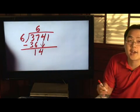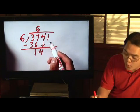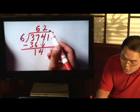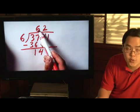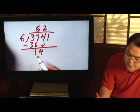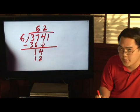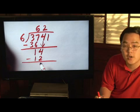And then the pattern repeats. 6 times what is going to be close to 14? Well, 6 goes into 14 two times. Now, just like you did with the 6, continue on with the 2. Multiply. 2 times 6 is going to give you 12. And then you do the subtraction again. 14 minus 12 is going to be 2.